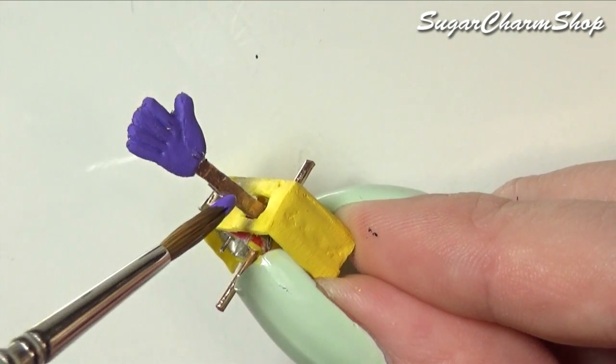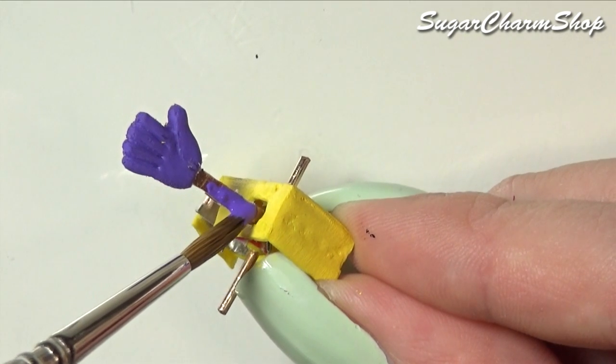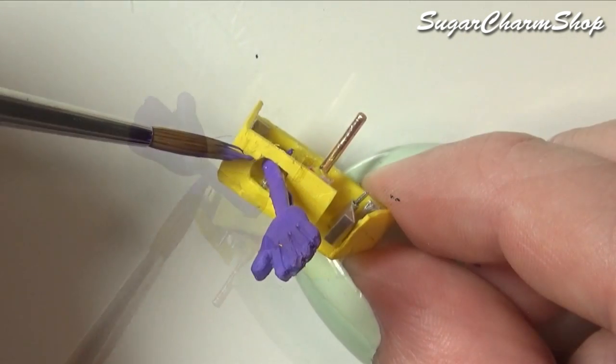Before adding the second side piece, I painted some details using acrylic paint and then sealed everything with glaze.